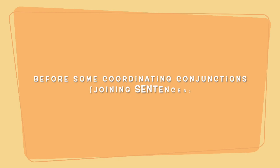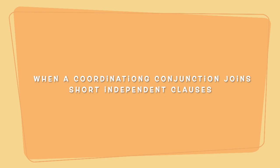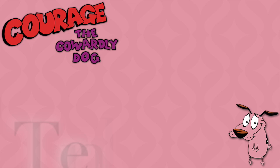The third way a comma is optional is before some coordinating conjunctions. This means when a coordinating conjunction joins short independent clauses, the comma is optional. An example with a comma would be: 'Melissa sings, and Bethany plays the drums.' The comma would go after sings, or you do not need a comma at all.